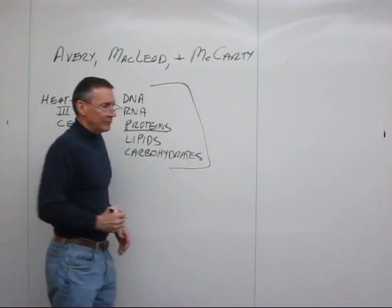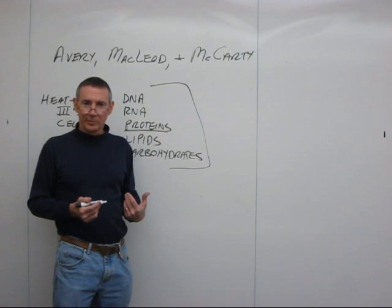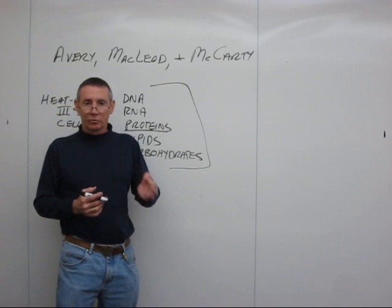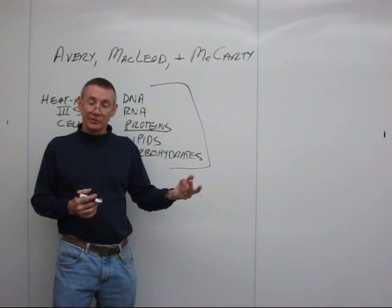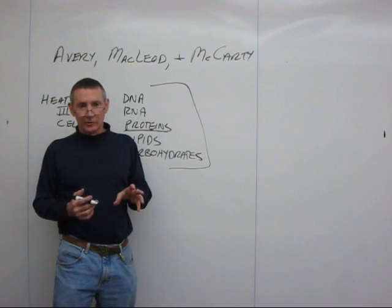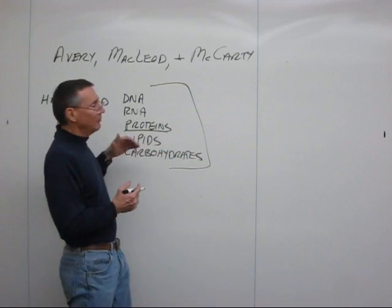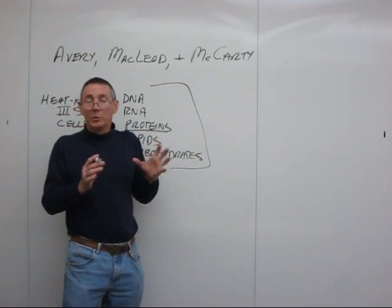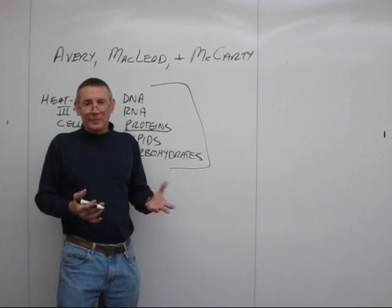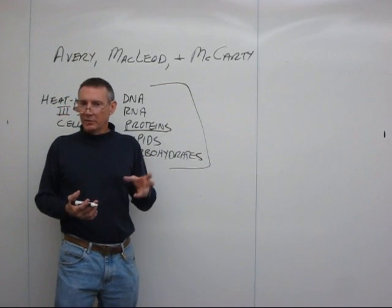So they set out to try these. How are you going to determine which component is responsible for transformation? It would be nice to just purify out one component, try it, and see if that component by itself will do it. They actually did attempt that, but they recognized there would be criticisms, because in the 1940s purification techniques weren't really good enough. Even if you had pulled out as pure a DNA sample as possible and found it would do transformation, a critic could say there's still some protein in there. So they needed another way of approaching this.